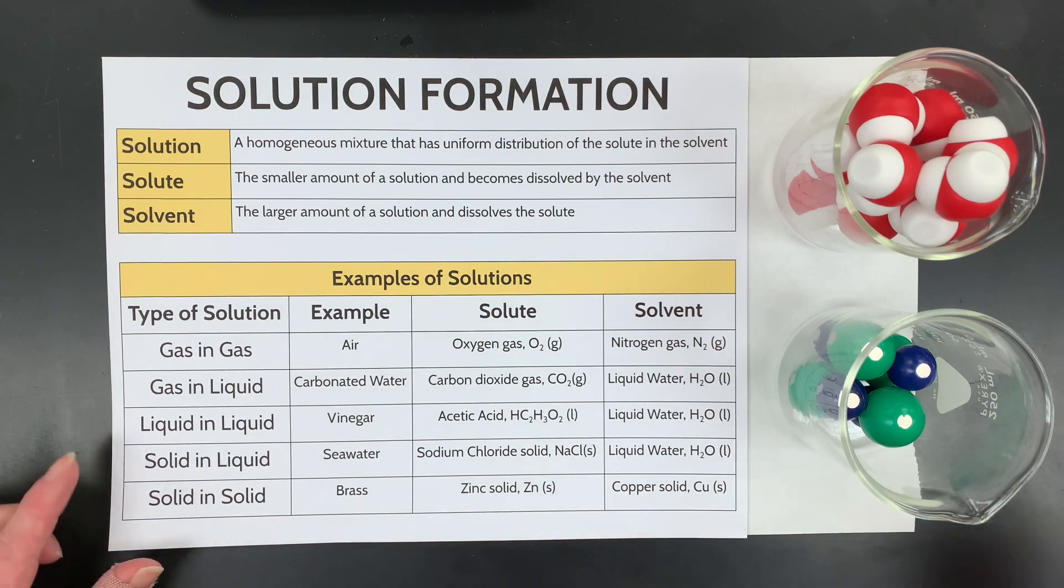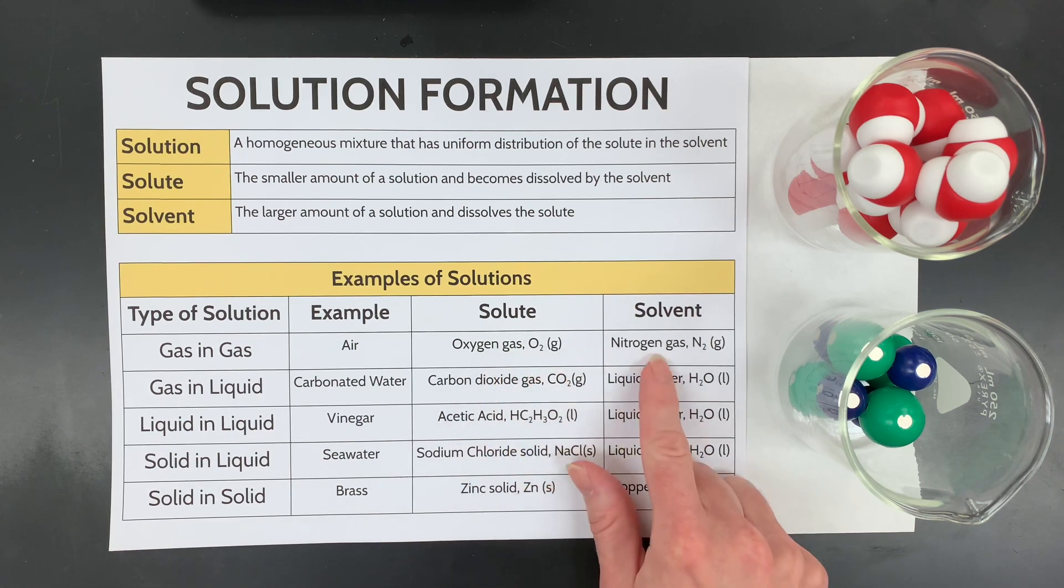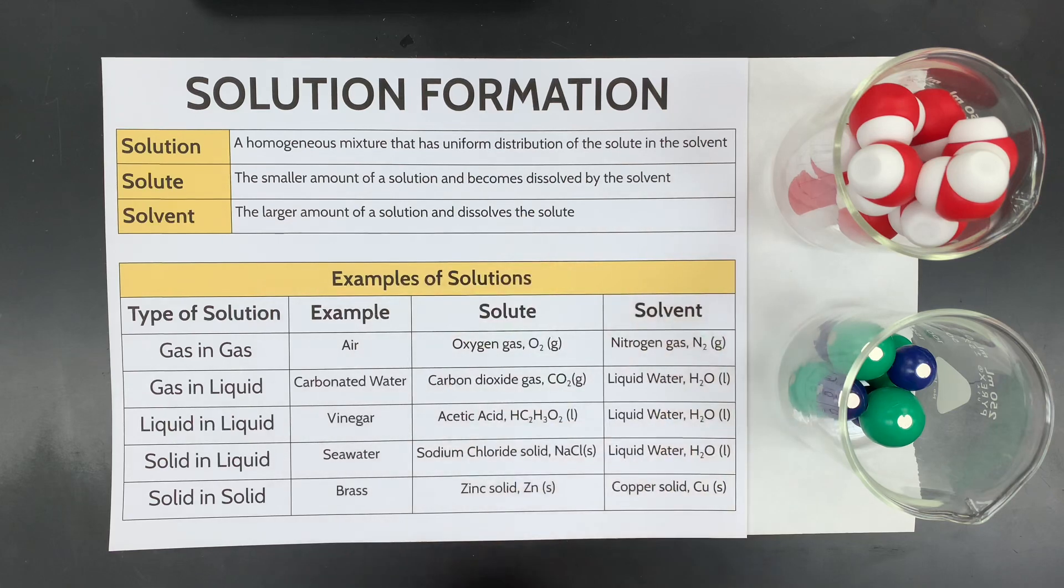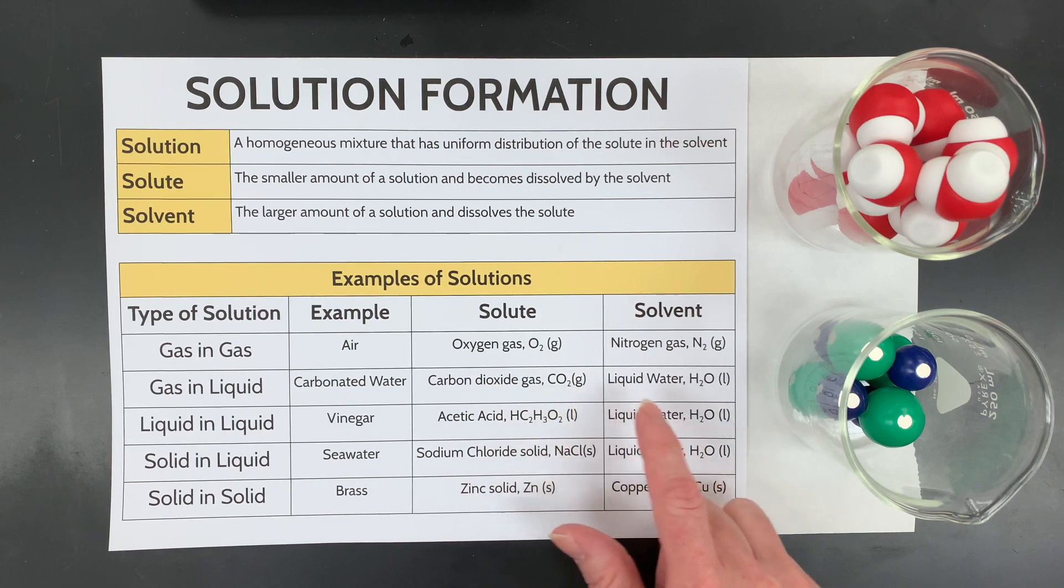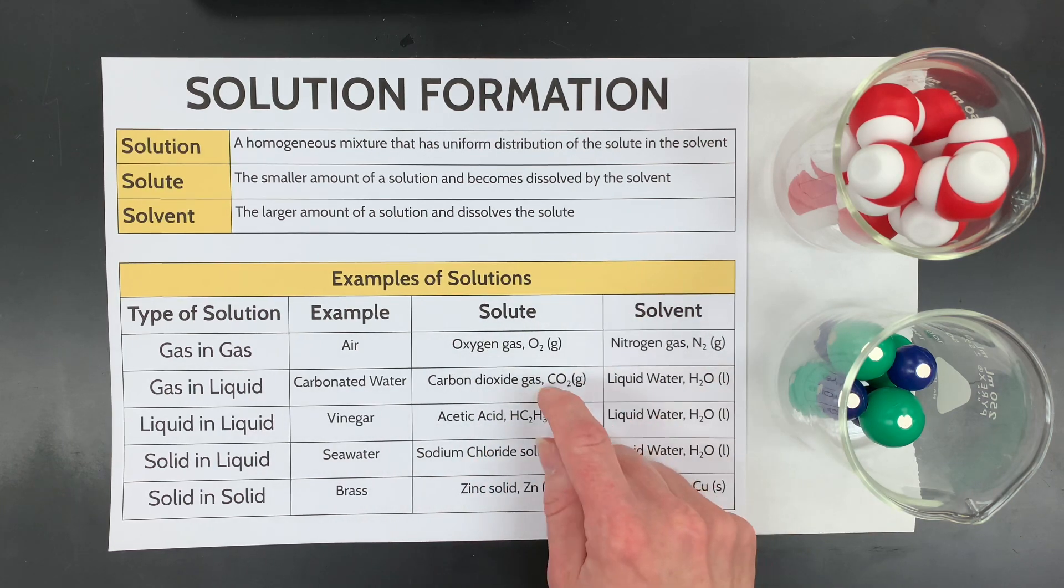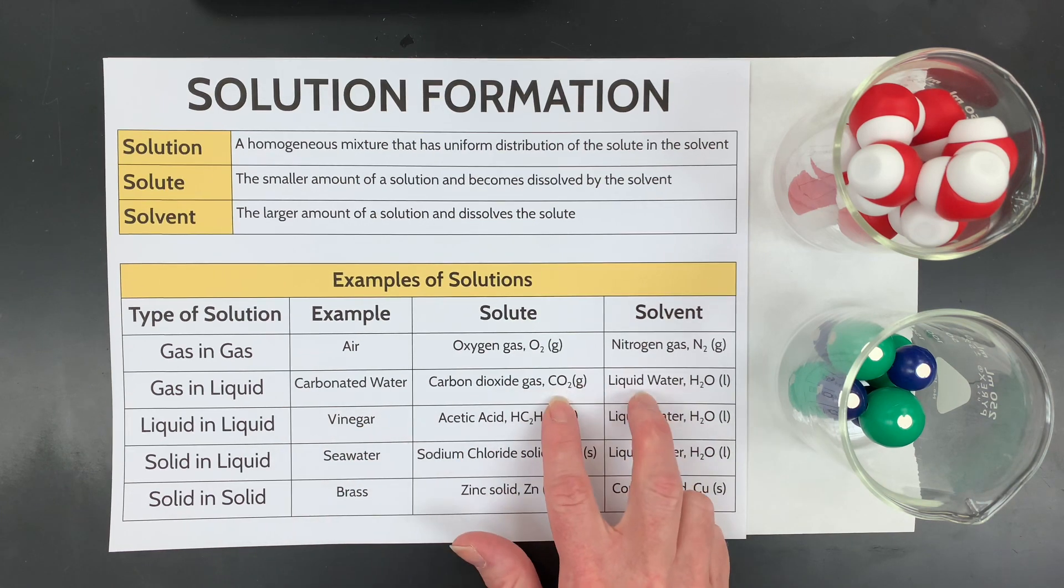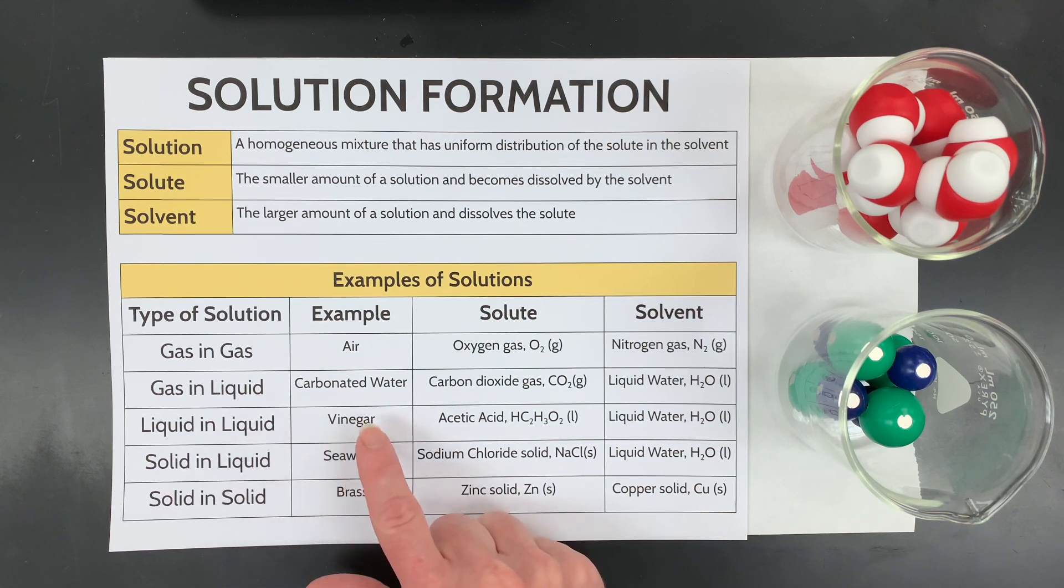So what are some specific types? Air is a great example of a gas and gas type of solution with oxygen and then mostly nitrogen. Carbonated water is probably a pretty good example for gases and liquids. The CO2 is the solute and then water is the solvent. Now those two actually won't stay dissolved, which we'll talk about in why will solutions form or not.